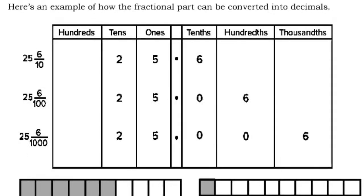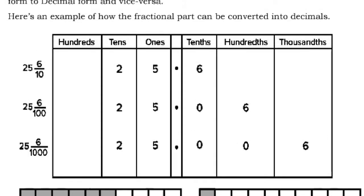Under 'What's New,' here is an example of how the fractional part can be converted into decimals. You have the place values: hundreds, tens, ones, decimal point, tenths, hundredths, then thousandths. So 25 and 6 over 10 gives ones 5, tens 2, tenths 6 — that is 25.6. And 25 and 6 over 100 is 25.06.